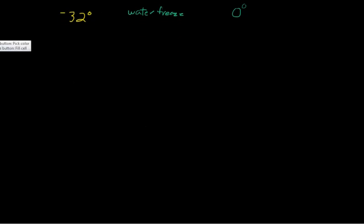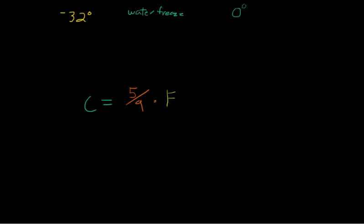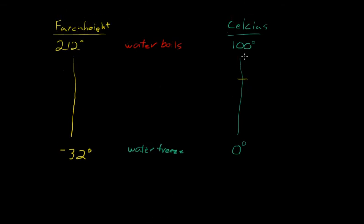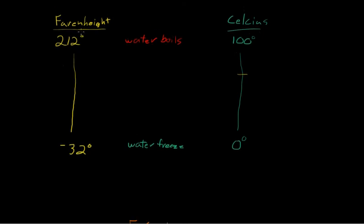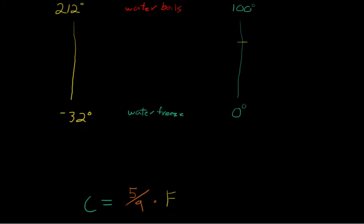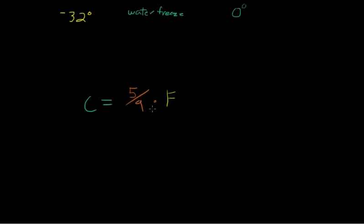Celsius equals 5/9 times Fahrenheit. That's because the scales are different. One degree of Celsius is a different size than one degree of Fahrenheit, because 212 all the way to minus 32 is the same distance as 100 to 0. So Celsius is a stretched out Fahrenheit scale. It's not a one-to-one scale that's just shifted. 5/9 is how much you scale each degree.